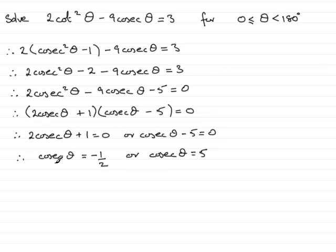Now, cosec theta is 1 over sine theta. So that's going to mean that 1 over sine theta is equal to minus a half, or 1 over sine theta is going to equal 5. Rearranging this first equation gives that sine theta would equal negative 2. And rearranging this one would mean that sine theta equals 1 fifth.